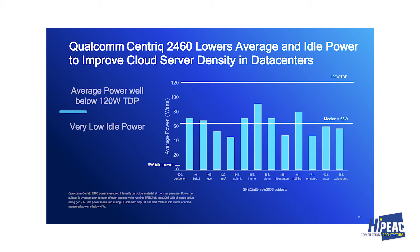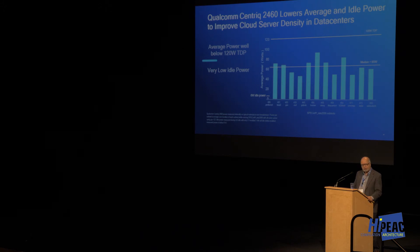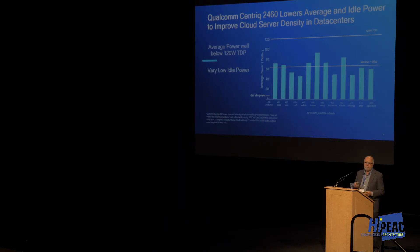Most of the time the chip runs at much lower power consumption. Averaging across the entire benchmark run, we found the median was 65 watts. This allows sophisticated power management to reduce overall energy costs. If your servers are idle, the idle power is only 8 watts — so if energy efficiency and cost matter to you, these things can be designed in. They don't happen by accident.